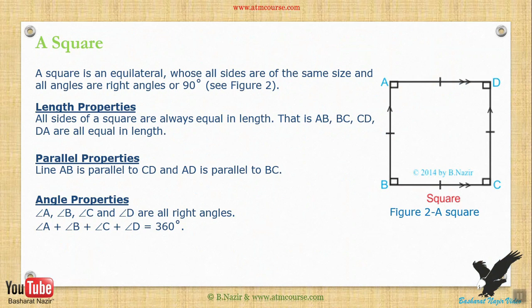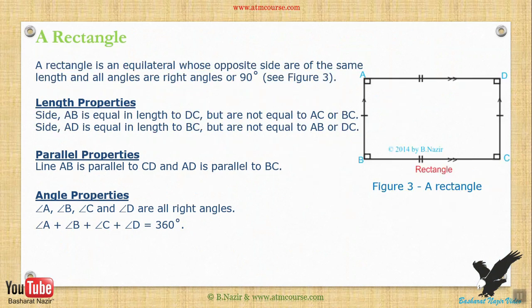Parallel properties: line AB is parallel to CD, and AD is parallel to BC. Angle properties: angle A, angle B, angle C, and angle D are all right angles. Angle A plus angle B plus angle C plus angle D equals 360 degrees.